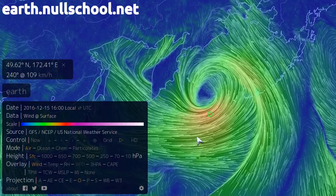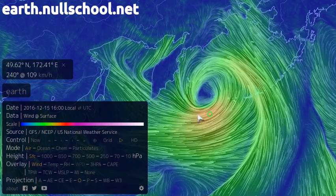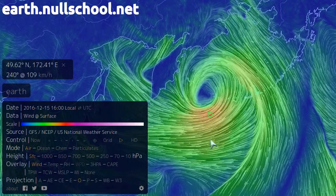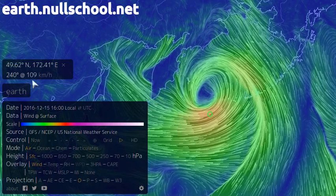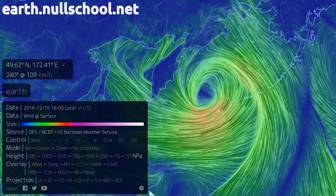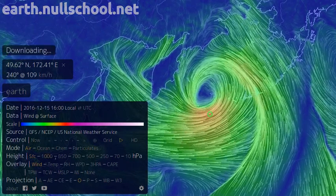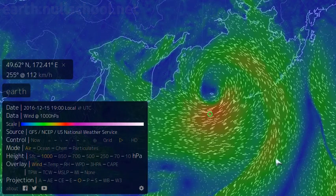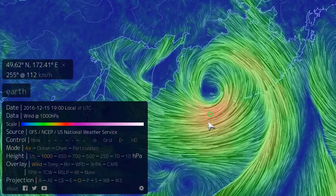I want to take a look at what happens to the winds as we go up in the atmosphere. Here you can see we have quite strong winds, 109k at the surface. As we go up, just above the surface, we can see that the winds get a little bit stronger.